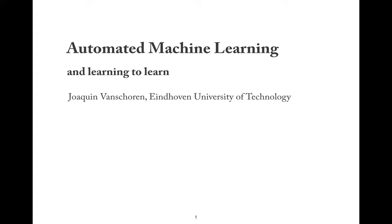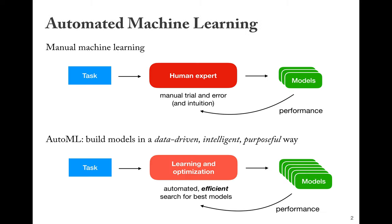Hi, this is Joaquin van Schroeven again and today we'll talk about automated machine learning and learning to learn. Normally when we solve machine learning tasks, we need a human expert that looks at the task and then manually tries to build some models, then looks at the performance of those models, and based on their own intuition and all these trials, tries to build better and better models.